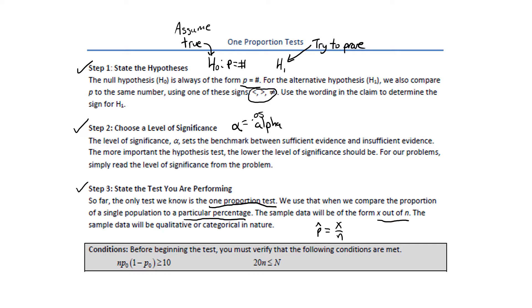The first condition is a little different than what we've seen before. Instead of p-hat, we're going to use p sub zero. This number comes from the null hypothesis. We'll also make sure that the sample size is no more than 5% of the population size by making sure this inequality is true: multiply the sample size by 20, and if the population size is larger than that, then we can assume that condition has been met.